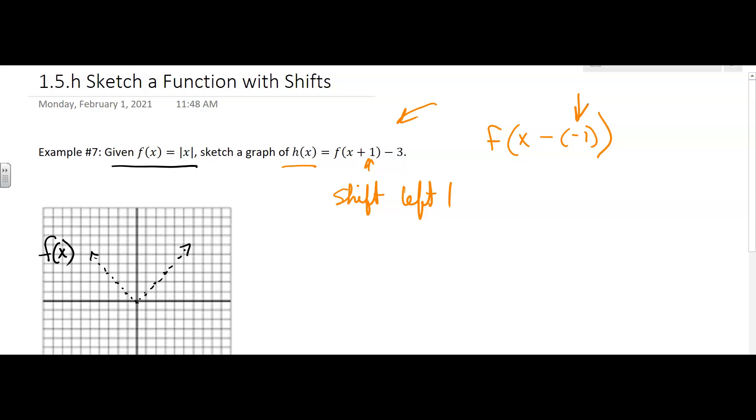Okay, then we also have this minus 3 out here. What kind of shift is that? That's a vertical shift. So the one gives me a horizontal shift, but the minus 3, that's a vertical shift. And so it's also going to shift down because it's a minus 3. It's going to shift down three units.